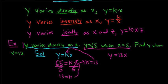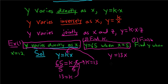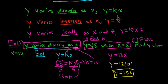Step one is to write down the equation. Step two is to find K, which is always necessary in these problems. Step three is to finish — find Y when X is 12. So Y equals 13 times 12, which is 156. Y is equal to 156. I hope this video has been helpful.